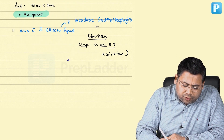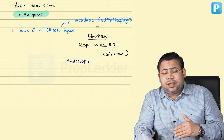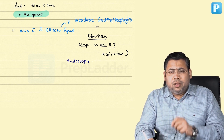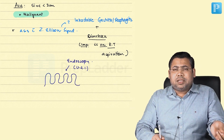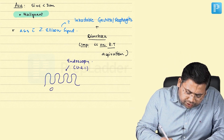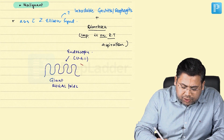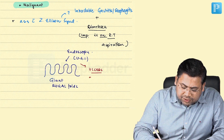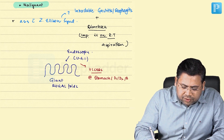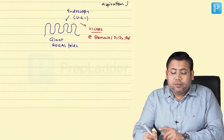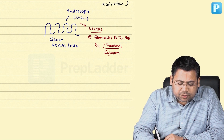On upper GI endoscopy in a patient presenting with dysphagia, gastritis, esophagitis, reflux, and diarrhea, you see giant rugal folds — also seen in Menetrier's disease. You also see ulcers not only in the stomach but extending to D1, D2, D3, D4, and even the proximal jejunum, reflecting the massive acid load produced.